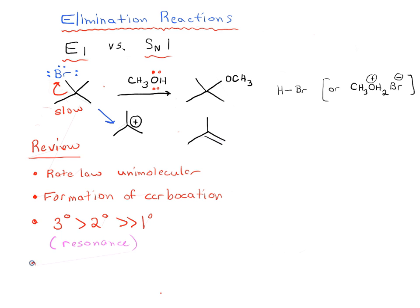And the last factor that the SN1 and E1 have in common is we always have a weak nucleophile or base. So in this case we have methanol as a perfect example of a weak nucleophile or base, and also examples like water or other alcohols. It's always not going to be something which bears a charge, it's going to be a neutral species.